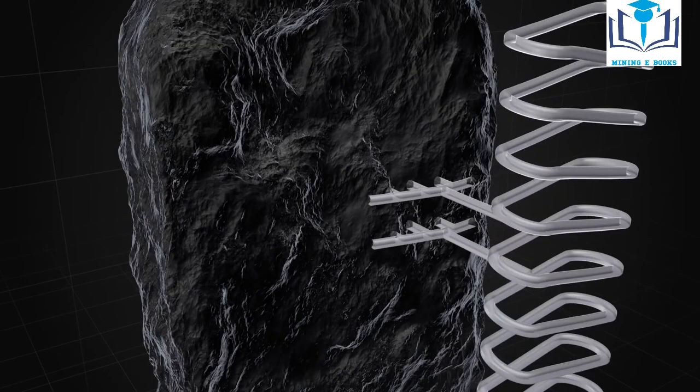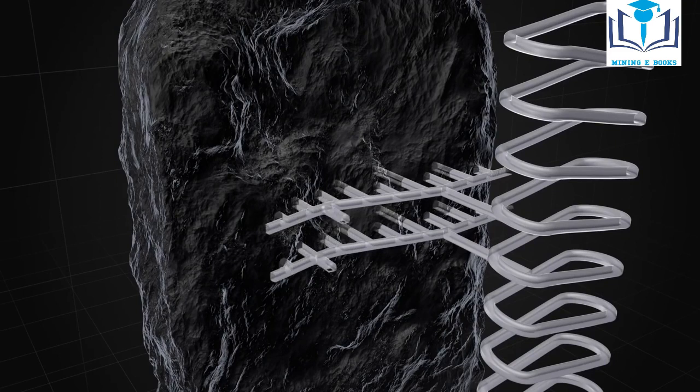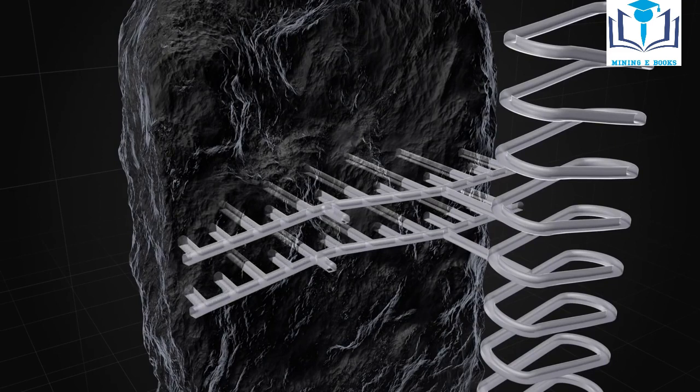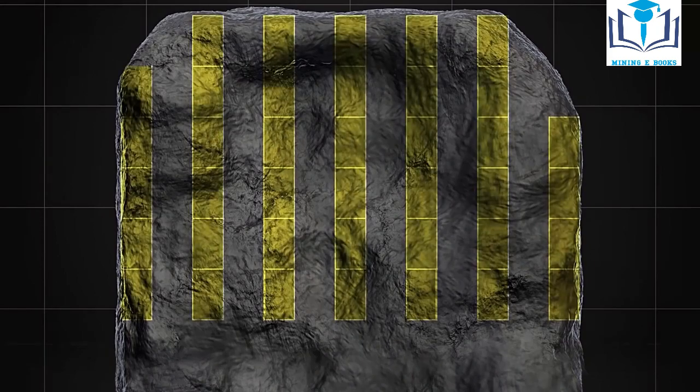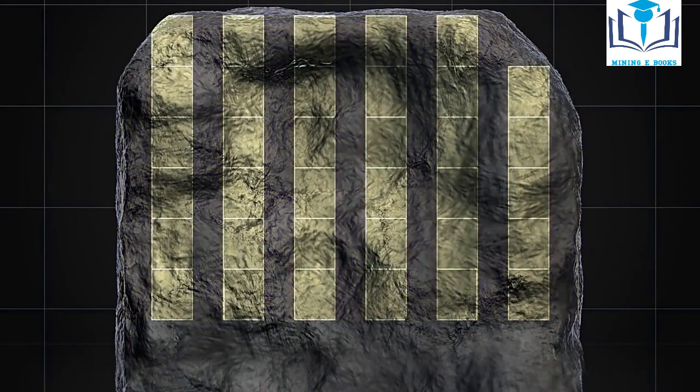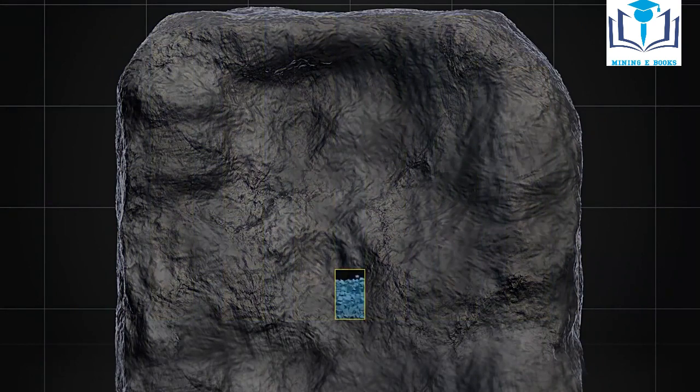Drifts are created through the ore body to enable mining of stopes between sub-levels. The ore body can be divided into primary and secondary stopes, where the primary stopes are mined first.